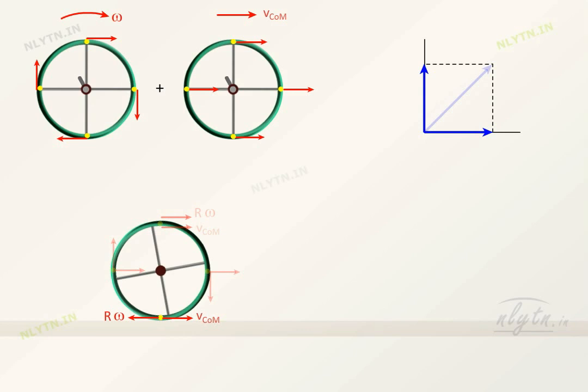An interesting point from this equation is that if the linear and the angular velocity of a rolling object is such that v is equal to omega r, then the instantaneous velocity of this point will be equal to zero.